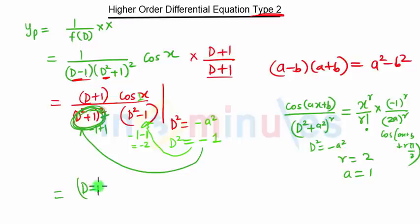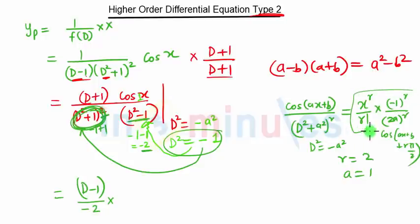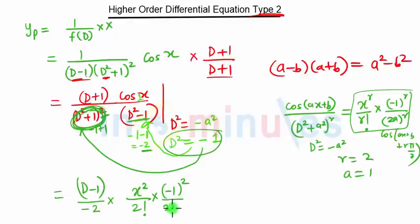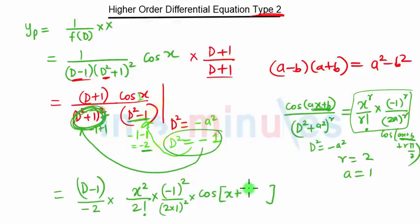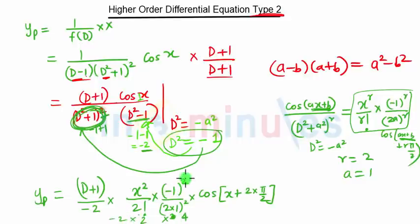The (d + 1) term remains as is. Substituting d² = -1, we get upon minus 2, times 1 upon (d² + 1)² — which is replaced by the formula. With r = 2: x² upon 2! times (-1)^(2/2) times (2·1)^2. That gives 2 squared equal to 4, factorial of 2 is 2, so 4 times 2 times minus 2 equals minus 16.